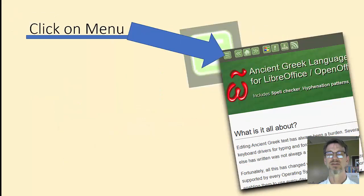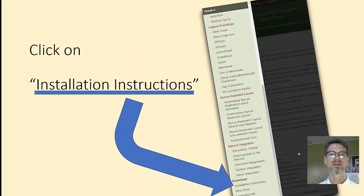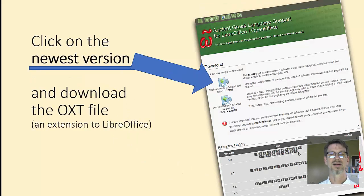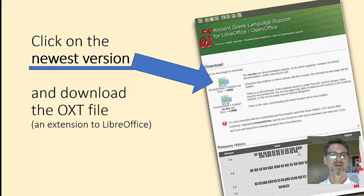Click on the menu in the top left — the horizontal lines. Scroll all the way down to download and installation instructions and click on that. Then click on the puzzle piece for the newest version, 1.6 beta 7. There are two versions here: one with documentation and one without.